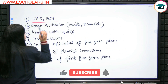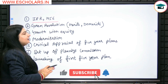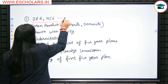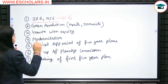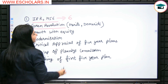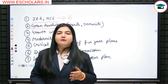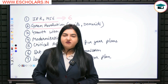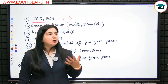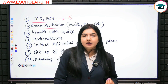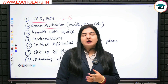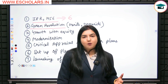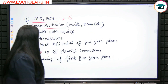First of all, IPR 1956 — Industrial Policy Resolution 1956 — we have to cover in a lot of detail for 6 marks. Next is Green Revolution: you have to cover it in detail including its meaning, merits, and demerits. We especially need to address what inequality the Green Revolution created between big farmers and small farmers.